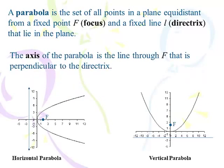The axis of the parabola is the line through the focus, through F, that is perpendicular to the directrix. With the horizontal parabola, that's the x-axis — the axis is horizontal. With the vertical parabola, it's the y-axis — the line that is vertical. That's where they get their name: vertical parabola or horizontal parabola. They get that from their axis.